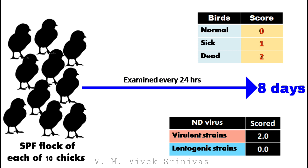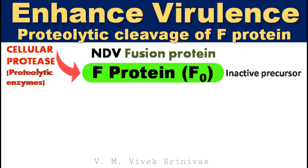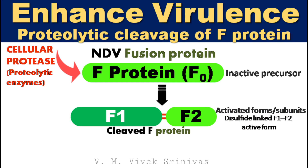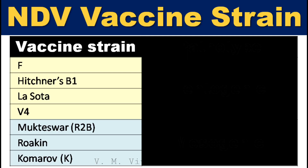As already discussed, fusion protein plays a major role in the virulence of Newcastle disease virus strains. Fusion proteins generally exist as an inactive precursor. But once this inactive protein is exposed to proteolytic enzymes like cellular proteases present inside the cells, or by trypsin, the inactive fusion protein precursor gets cleaved into two active subunits. In this process, the virulence of Newcastle disease virus gets increased. So the proteolytic cleavage of fusion protein enhances the virulence of Newcastle disease virus.